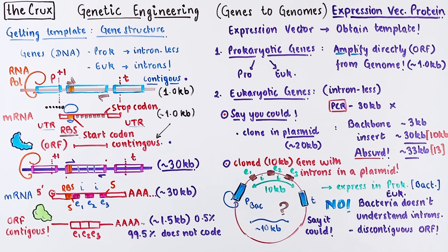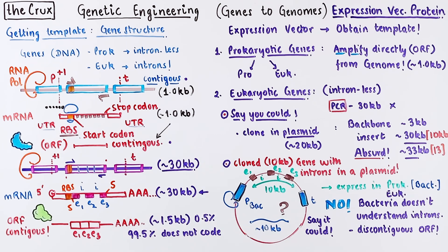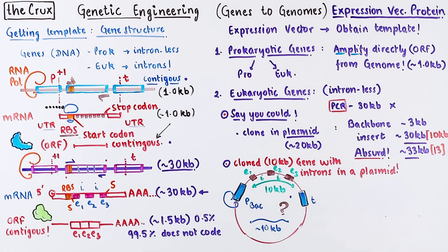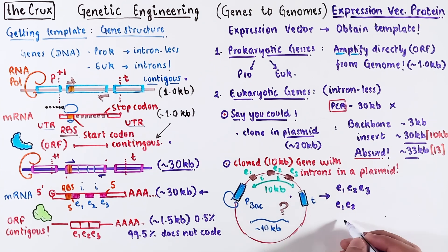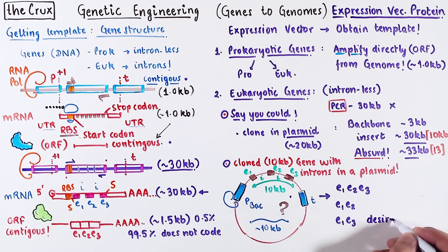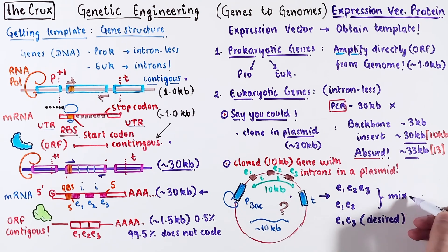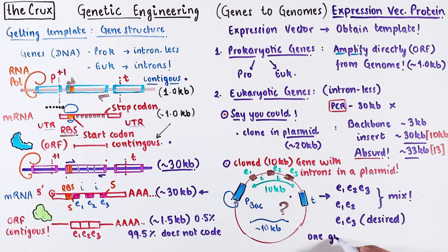Say the bacteria could understand intron and exon language, or alternatively, say you express this plasmid in a eukaryote — eukaryotes deal with introns all the time. This is not hypothetical anymore. In eukaryotes, from this gene, you could potentially get three types of mRNA. We have a mix of other mature RNAs produced from this plasmid, which means you make three types of protein — this is just alternative splicing in action. Our job is to get one protein, not a mix.